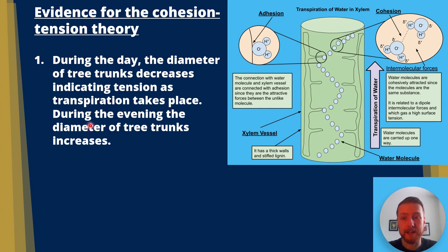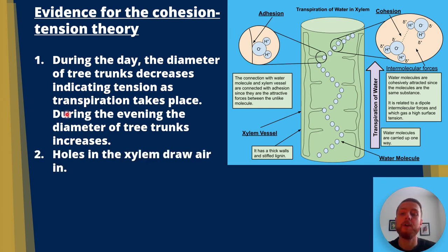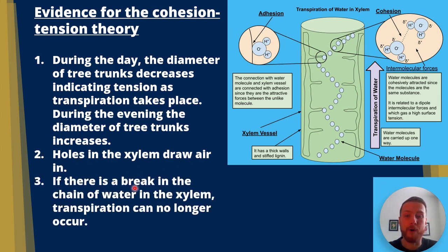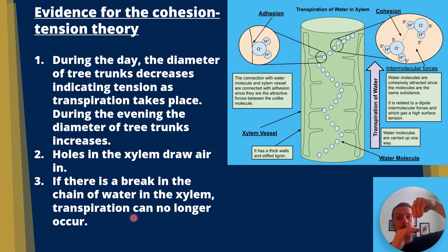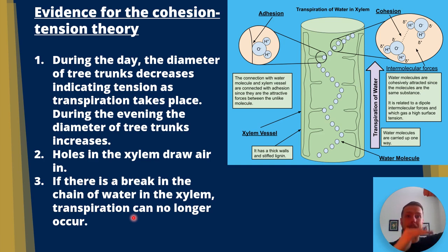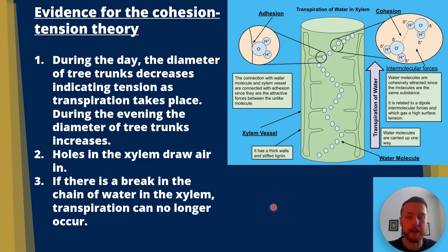During the evening, the diameter of tree trunks increases. Number two: holes in the xylem draw air in. Number three: if there's a break in the chain of water in the xylem, transpiration can no longer occur — the water above the break keeps getting pulled up through the xylem, but the water below it, not cohering with the water above, stays where it is. That's strong evidence for the cohesion tension theory.